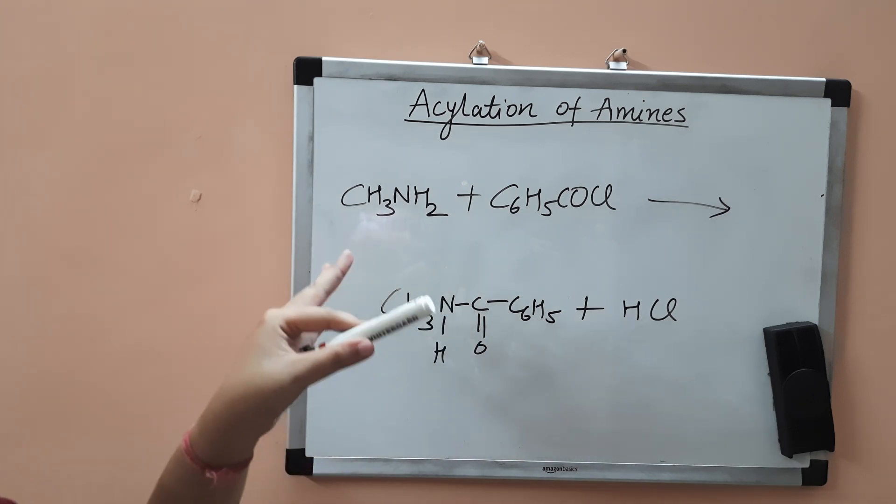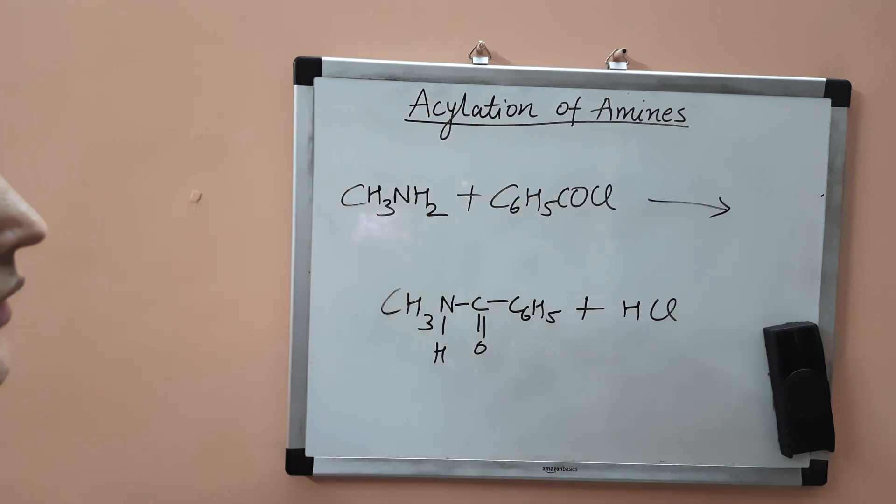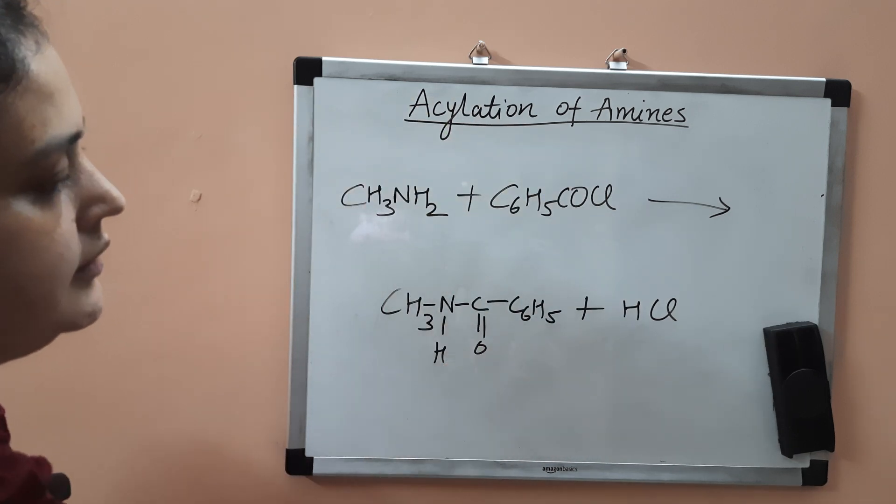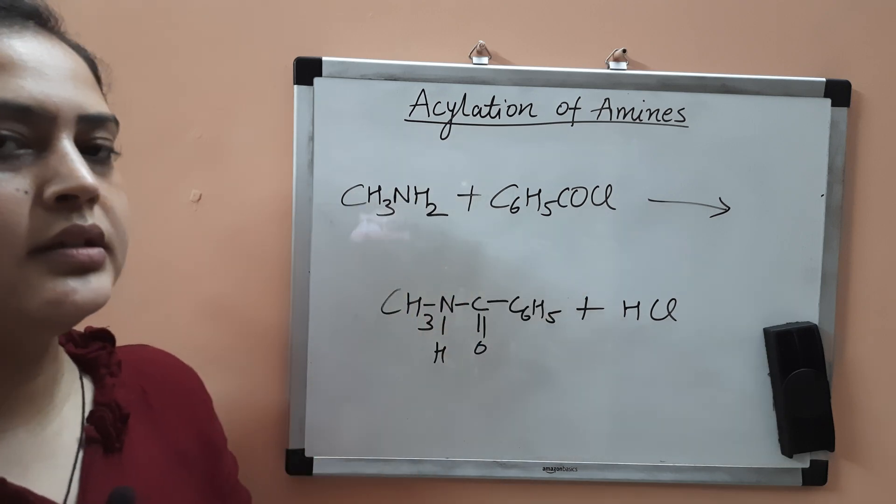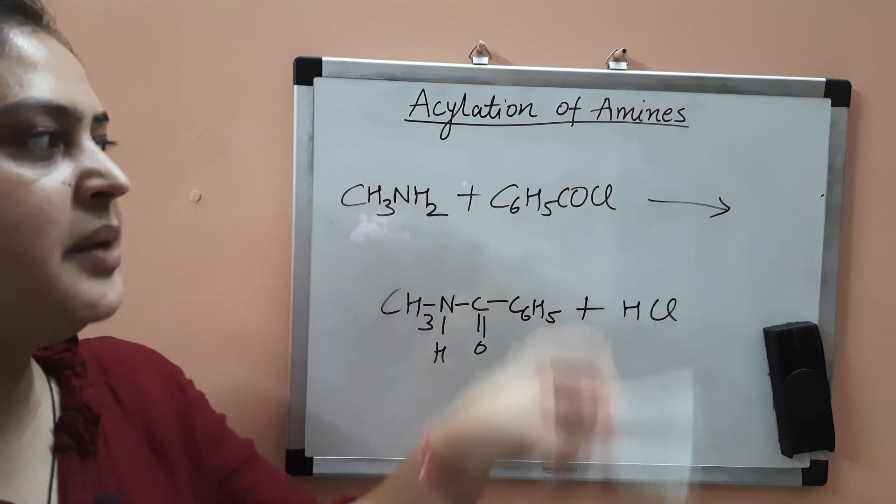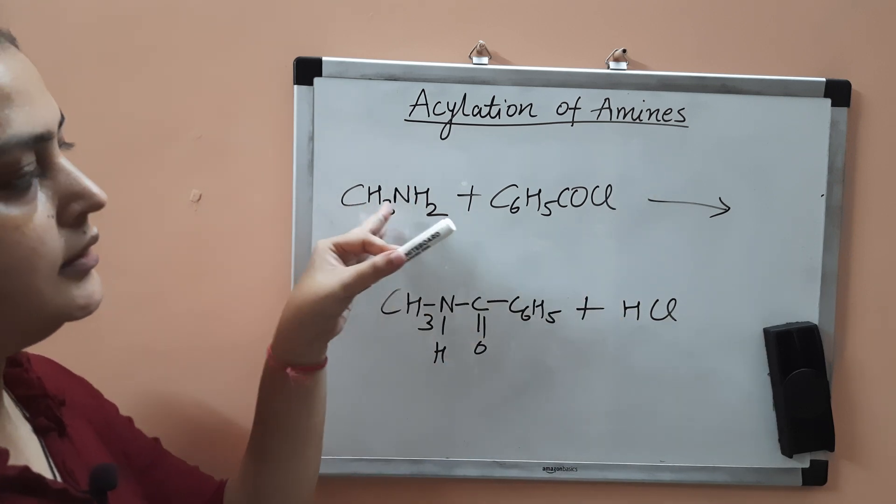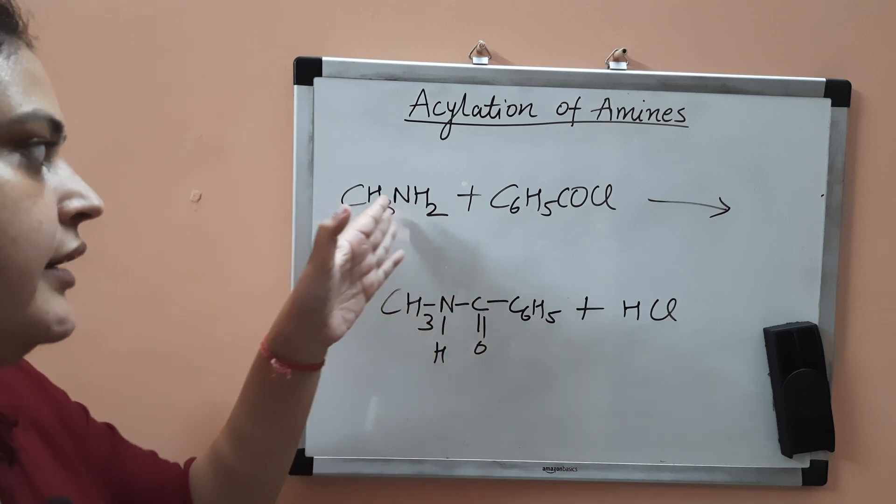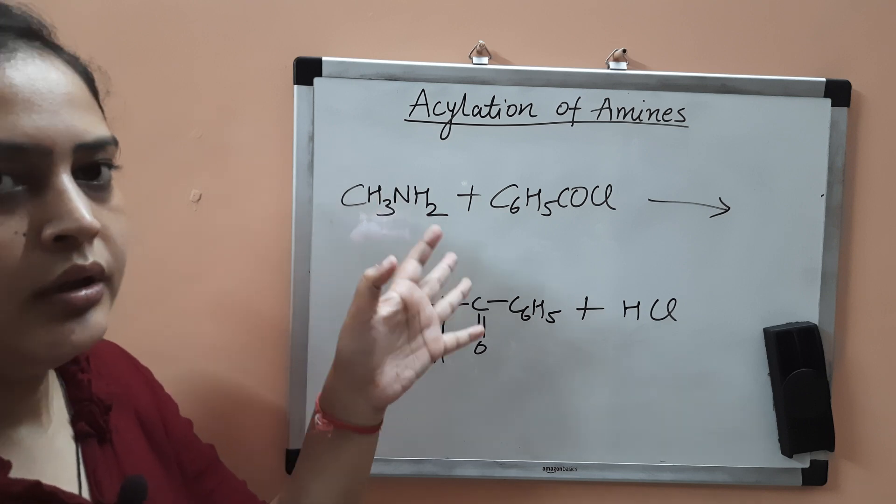This is how we can do the acylation of amines and get the amides. One thing more: this reaction occurs in the presence of a base. That base should be stronger than the amine, otherwise it won't be able to remove the hydrogen atom from the amine because amine is also basic in nature.